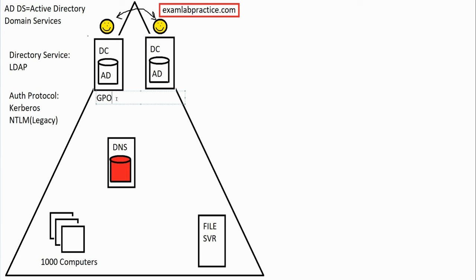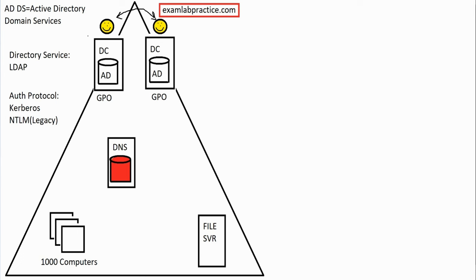One of the great things about domain controllers is GPOs — Group Policy Objects. A group policy object is an object you can create that has all these settings and parameters — any attribute you want to configure or change on machines, you can do through a GPO. For example, you can force firewalls to be turned on, ensure antivirus is up to date, or disable wallpaper features. There are literally thousands of things you can do inside a GPO, and they replicate between domain controllers.